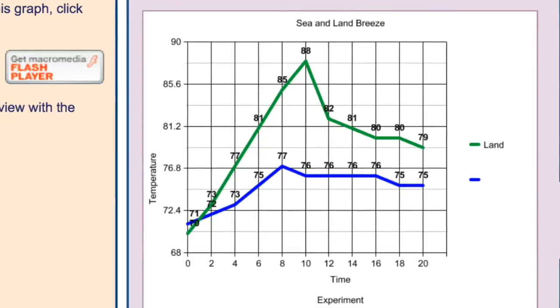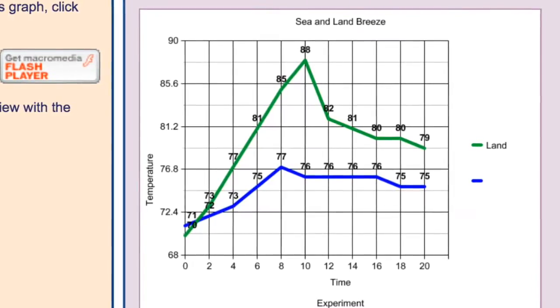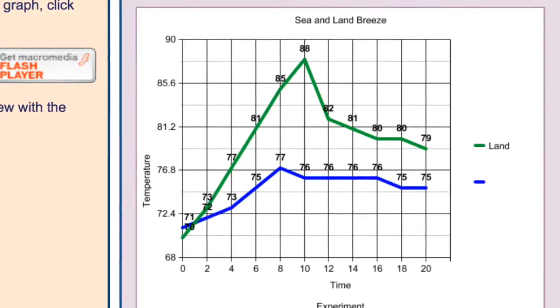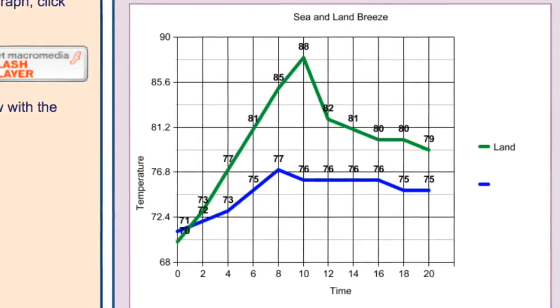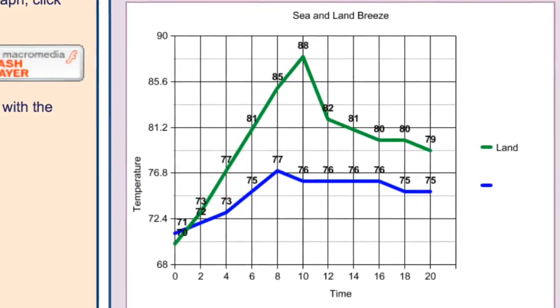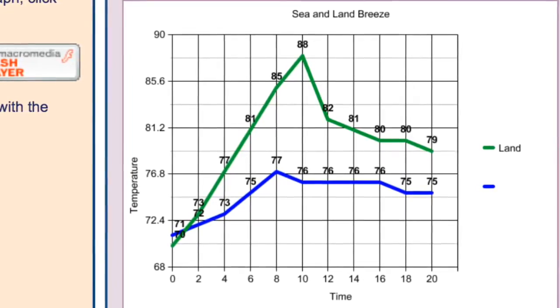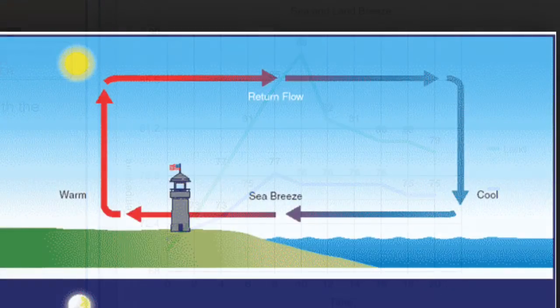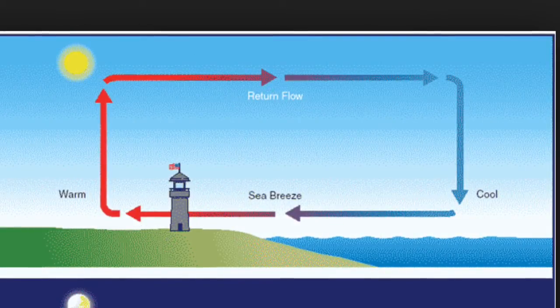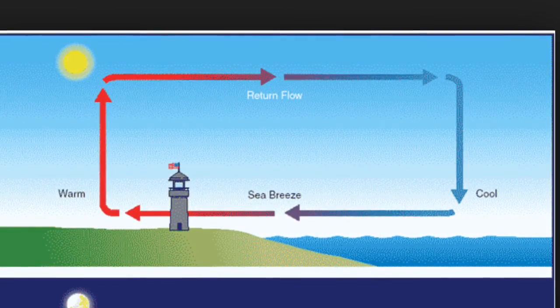As we can see from the graph, land is going to heat quickly and be very warm in the middle of the day, and then cool off very quickly. The water, however, takes a lot longer to warm up and a lot longer to cool down. Now we have the scientific basis for understanding sea breeze and land breeze.